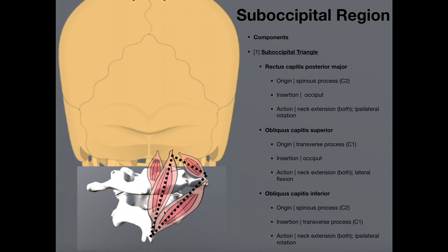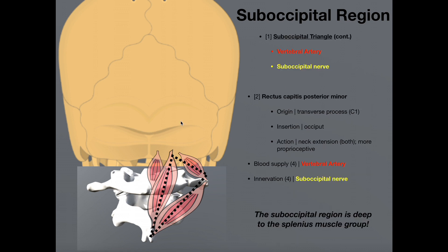So these three muscles are what comprise the suboccipital triangle. Note that the muscle over here is not part of the triangle, but it is a suboccipital muscle — the rectus capitis posterior minor, which we'll come back to in a few minutes. What we want to talk about now are some other structures contained within the suboccipital triangle: the vertebral artery and the suboccipital nerve.